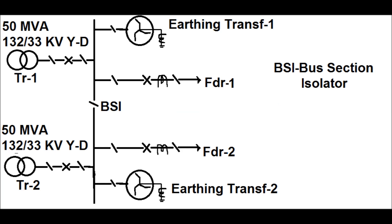In this diagram, a simplified single line diagram has been shown for a substation. There exist two power transformers operating at 50 MVA, 132 kV by 33 kV. The primary is Y-connected and the secondary is Delta-connected — 132 kV is star-connected and 33 kV is Delta-connected. Since the 33 kV side is Delta-connected, there is no earthing system.